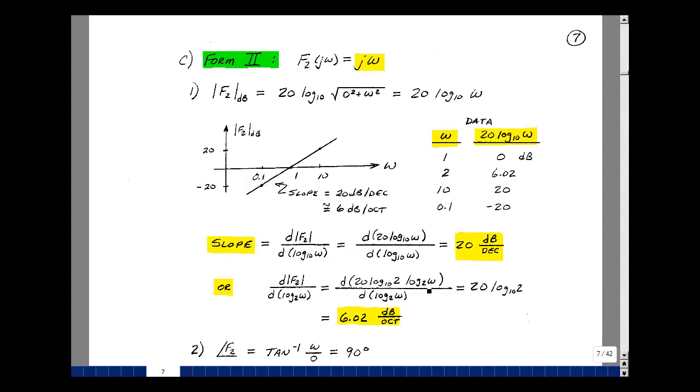If you're working in octaves, we would need to convert this into log base 2 of omega. This turns out to be 20 times log base 10 of 2 times log base 2 of omega. Our x-axis would be octave paper, so we could pull out this constant, which is 20 log base 10 of 2, and again we have dx dx. 20 log base 10 of 2 is 6.02. The y-axis is dB, the x-axis is octaves. The phase angle: we just have jω. We take the arc tangent of the imaginary part over the real part. The real part is 0, so that's the arc tangent of infinity, which is 90 degrees.